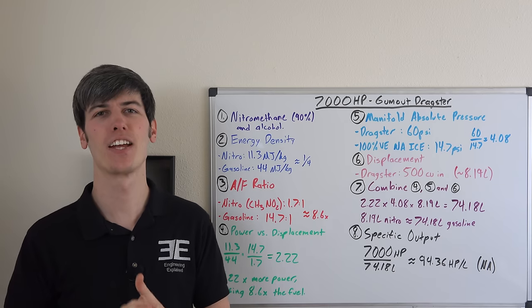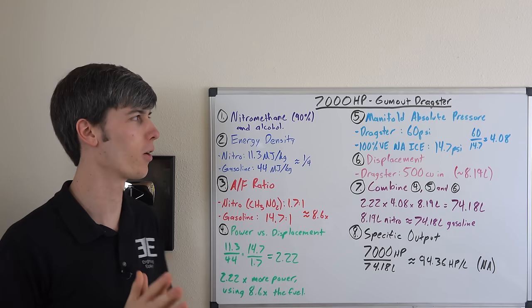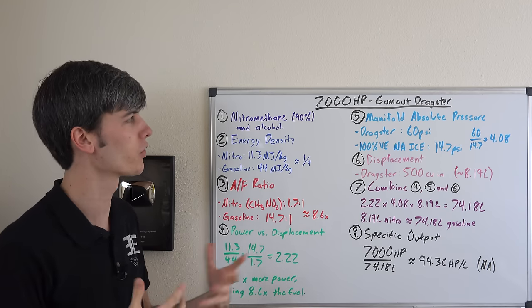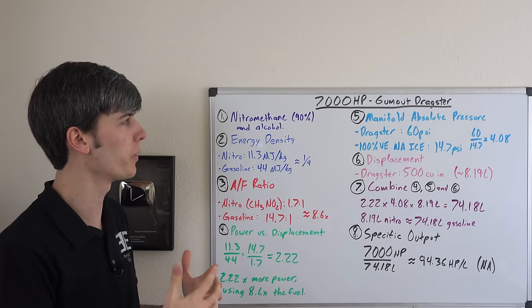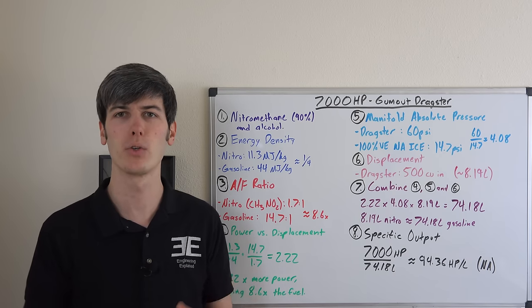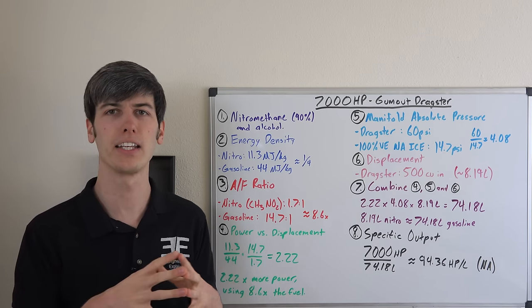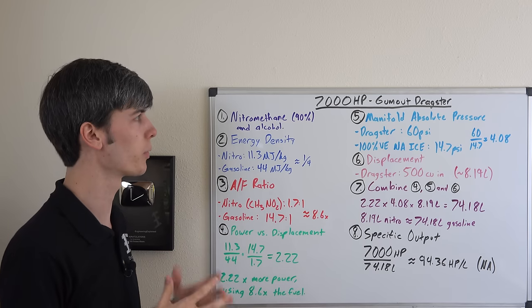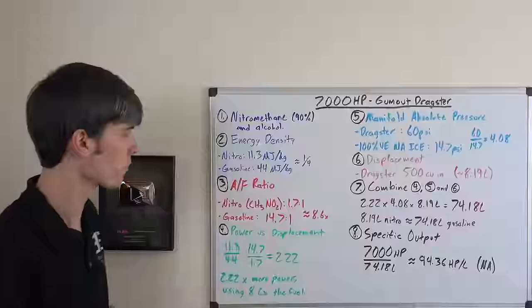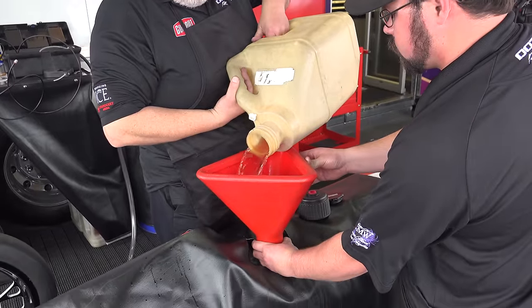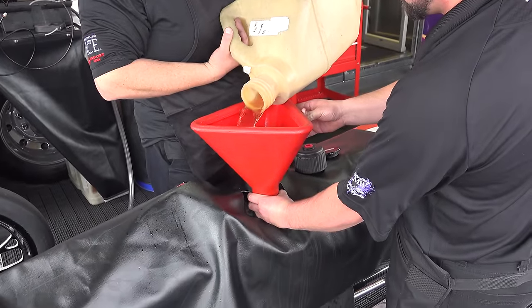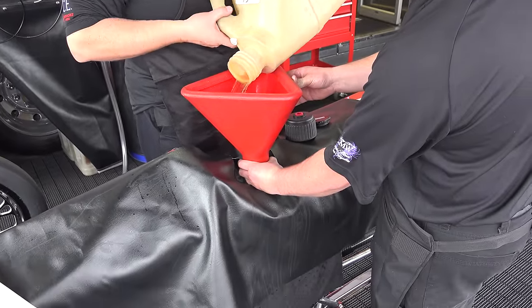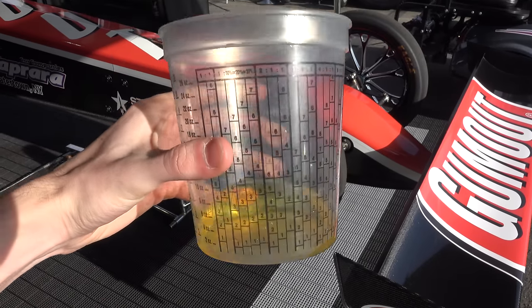So just how does this engine produce 7,000 horsepower? I'm going to make a comparison here so it's something we can all be a little bit more familiar with. I'm going to compare it to a naturally aspirated gasoline engine and see how it stacks up and see if it makes sense that this engine could produce 7,000 horsepower.